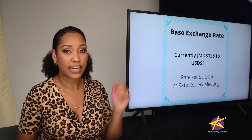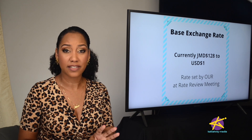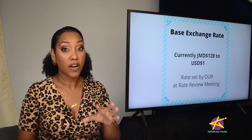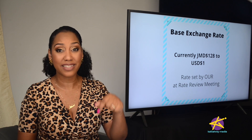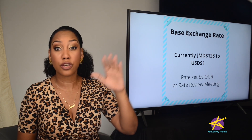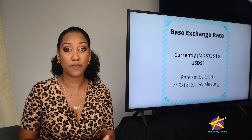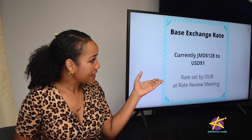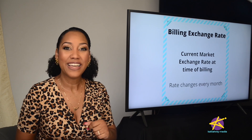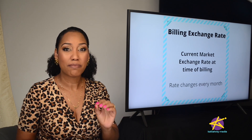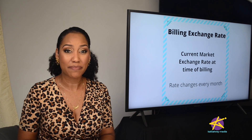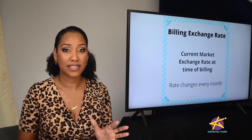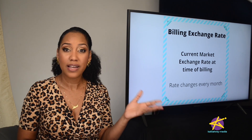Now let's talk about these two things. The Office of Utilities Regulation, or OUR, sets the base exchange rate every four years. The current rate is 128 to 1 US. This number is currently under review — there's a rate review meeting this year, so expect a huge jump because as of Friday we're at more than 149 to 1 US. The billing exchange rate is the current market exchange rate at the time of billing, and this number changes from month to month — this is where they make up for the difference.